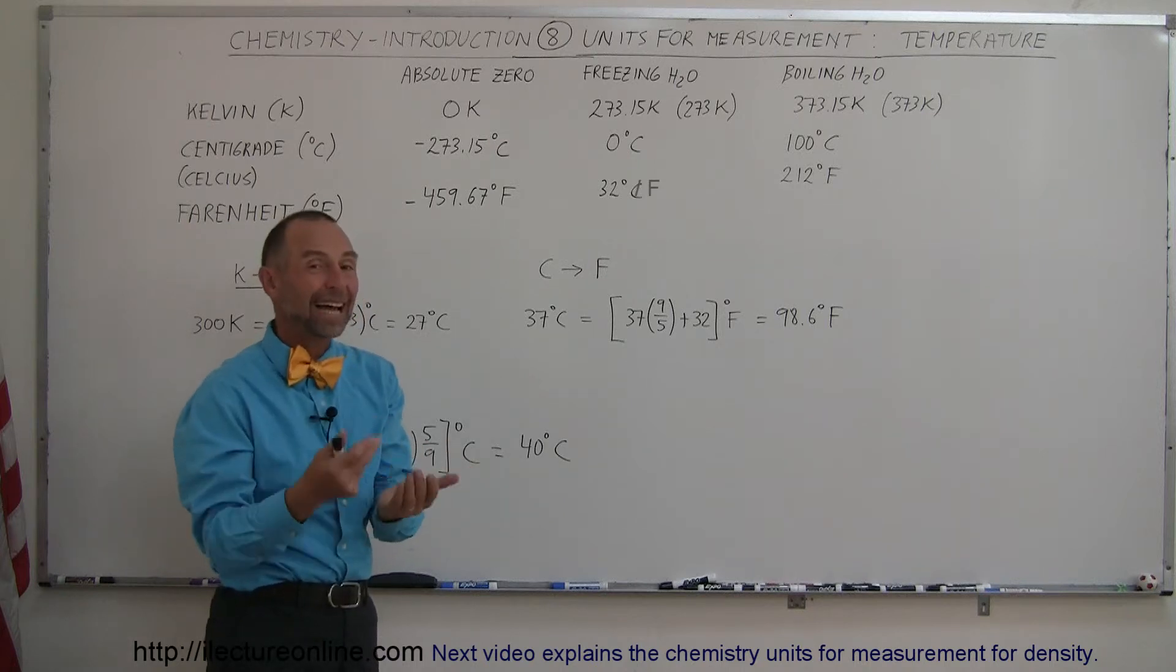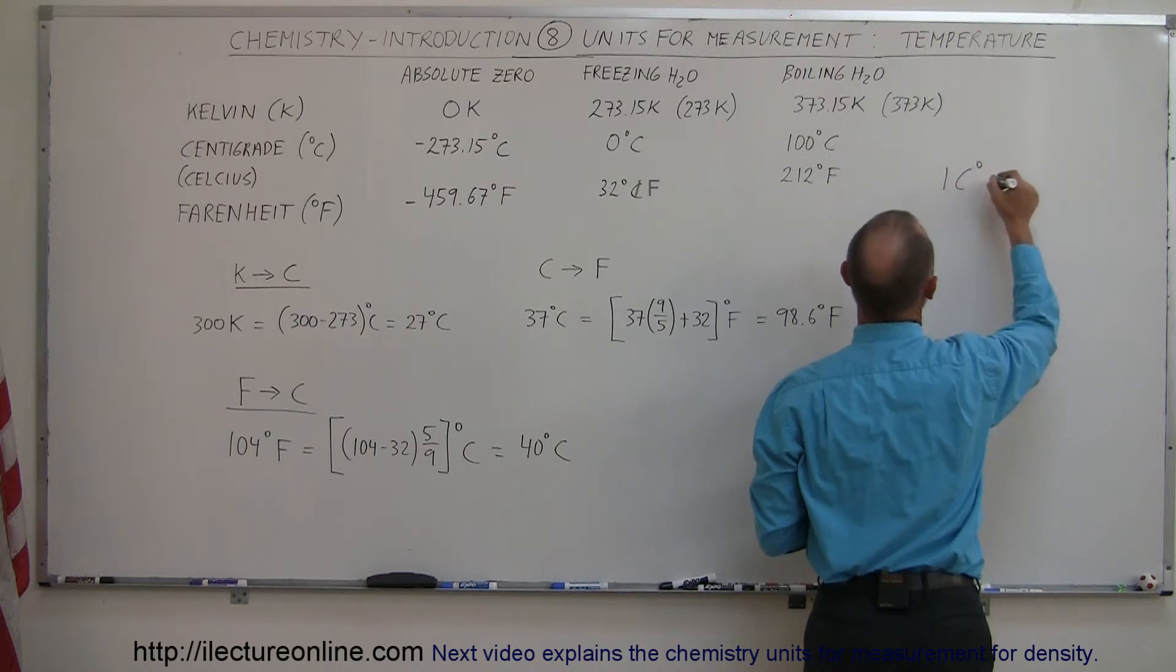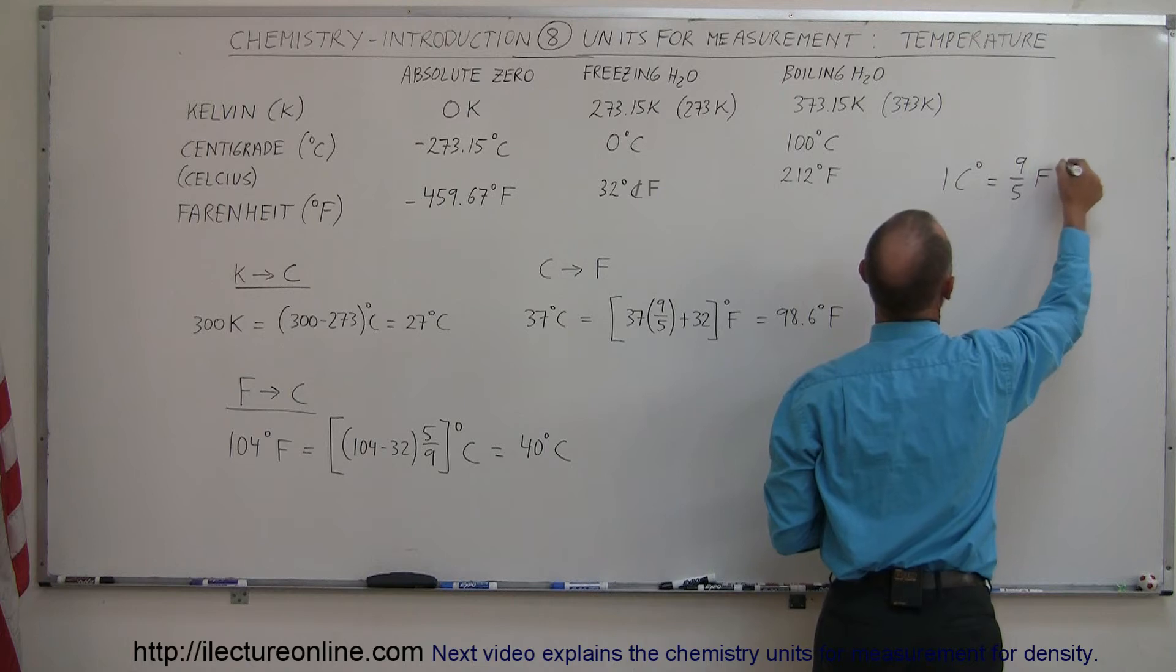So 1 centigrade degree is 9 fifths 1 Fahrenheit degree, you might want to write that down. So 1 centigrade degree is equal to 9 fifths Fahrenheit degree.